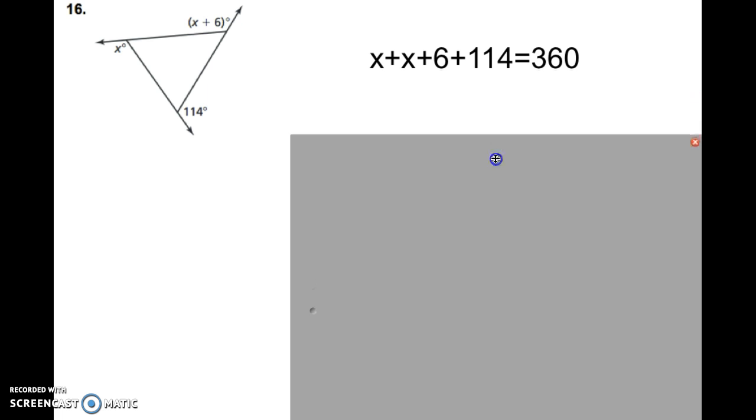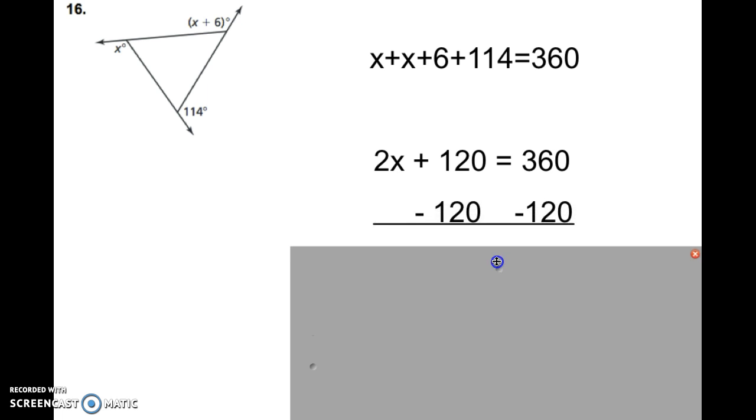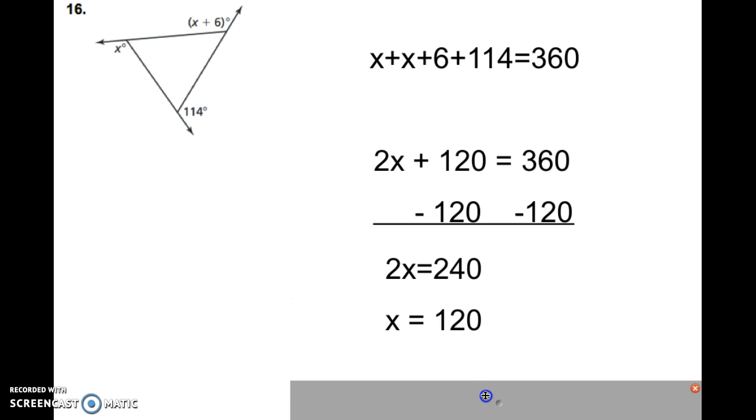With that, we can go ahead and combine, and we get 2x plus 120, that's 6 plus 114, equals 360. We're going to subtract both sides, subtract away the 120. We're left with 2x equals 240. We're going to divide both sides by 2 to solve for x, and we're left with x equals 120.